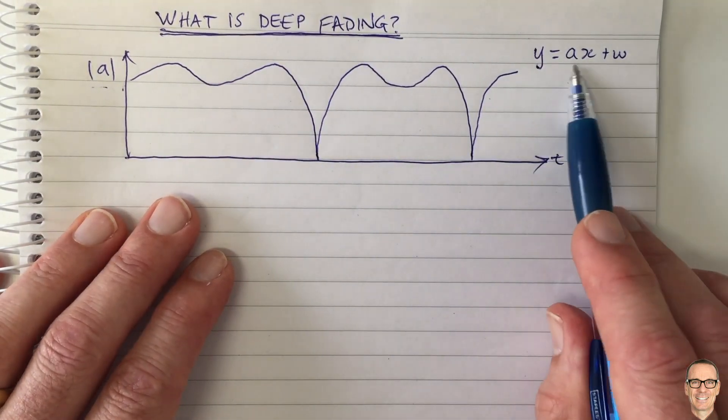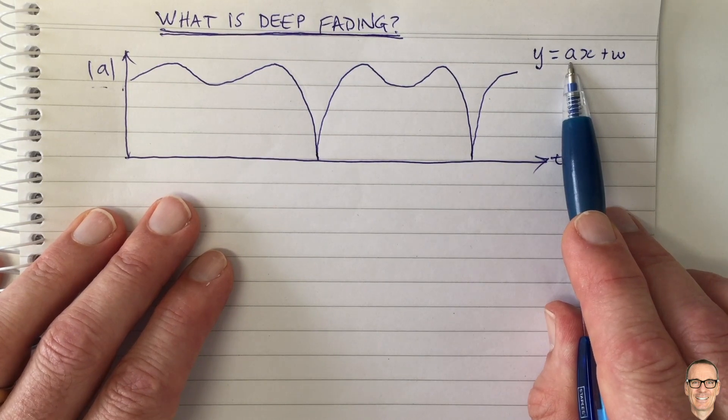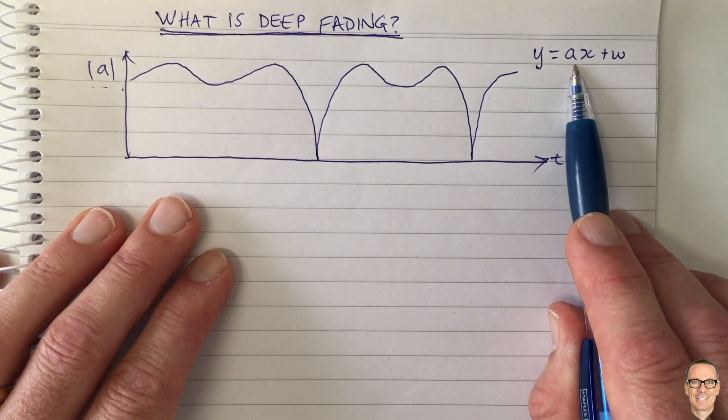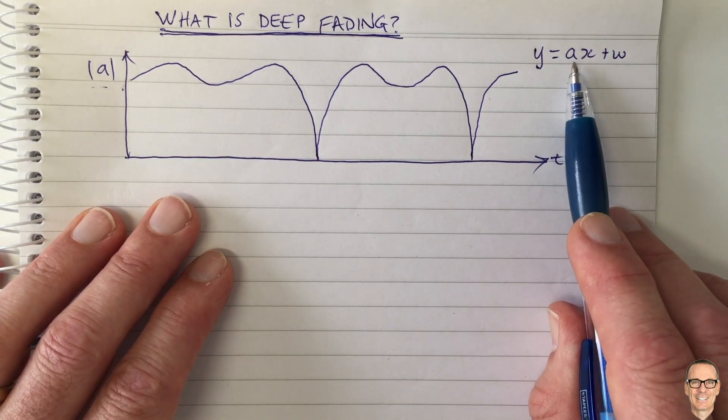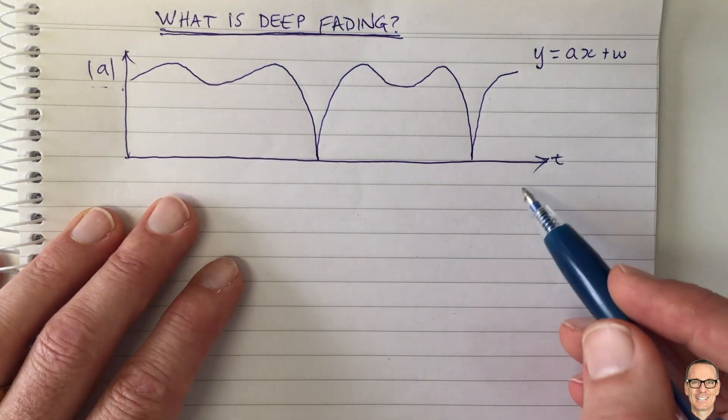And this is narrow band because all the different paths, reflecting paths, all arrive within the same symbol. And if you want more information on frequency selective fading and narrow band fading, there's videos on the channel in the links below.